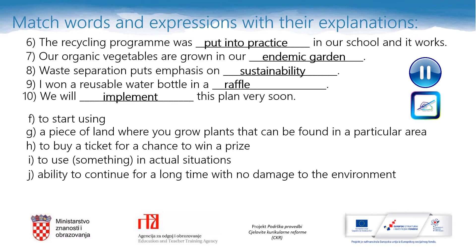This is the second part of the same task. Match the underlined words and expressions with their explanations. The sentences are: The recycling program was put into practice in our school and it works. Our organic vegetables are grown in our endemic garden. Waste separation puts emphasis on sustainability. I won a reusable water bottle in a raffle. We will implement this plan very soon. The explanations are: to start using; a piece of land where you grow plants that can be found in a particular area; to buy a ticket for a chance to win a prize; to use something in actual situations; ability to continue for a long time with no damage to the environment.